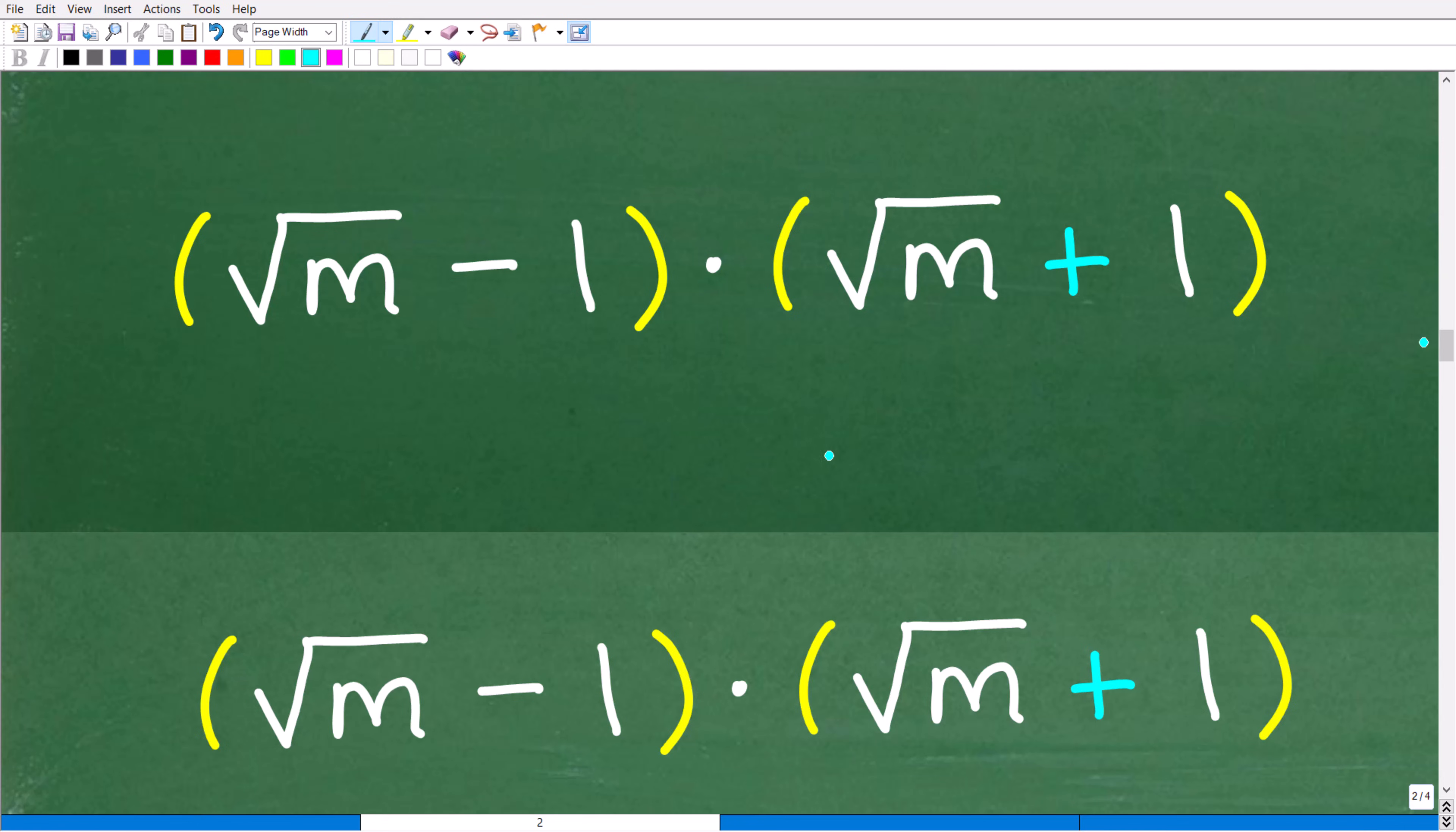Square root of m minus 1 times the square root of m plus 1. How can we do this problem? Well, there's two ways you can approach this problem.